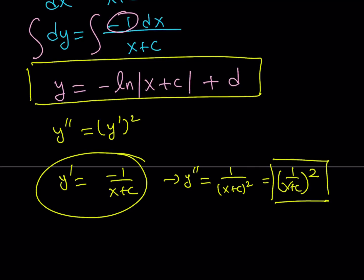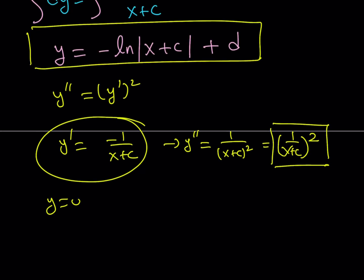How about y equals 0? Well, obviously, that's a solution, too, because if y is equal to 0, then the first derivative is 0, the second derivative is 0, all the derivatives are 0. Therefore, our equation is also satisfied by this function. In other words, we have two solutions to this equation.